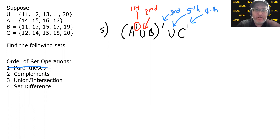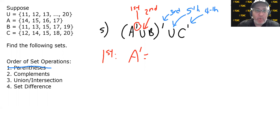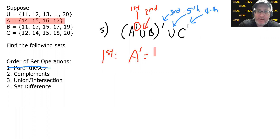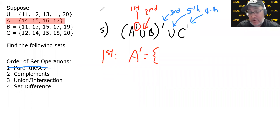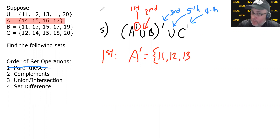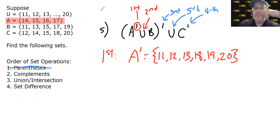Invest some time up front deciding how to attack this problem. Step one: find A complement. The universe is 11 through 20, and A contains 14 through 17. So A complement is: 11, 12, 13, then we skip 14, 15, 16, 17, then 18, 19, and 20.